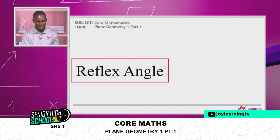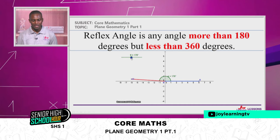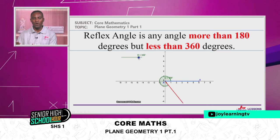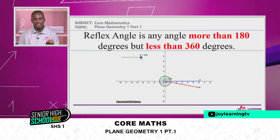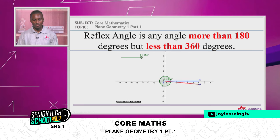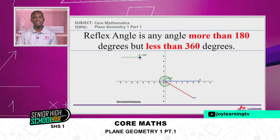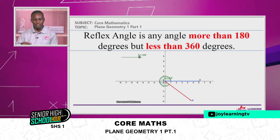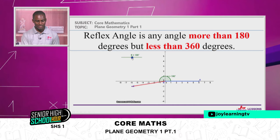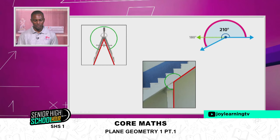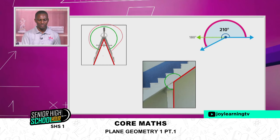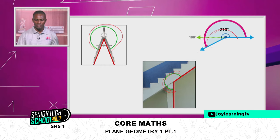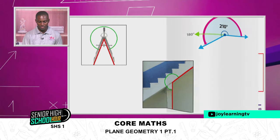Beyond 180 degrees, we call it a reflex angle. A reflex angle is an angle more than 180 degrees but less than 360 degrees — for example, 270°, 280°, 300°, 345°, and 359° are all reflex angles. We can see reflex angles in a compass, under a staircase, and in various structures in our environment.